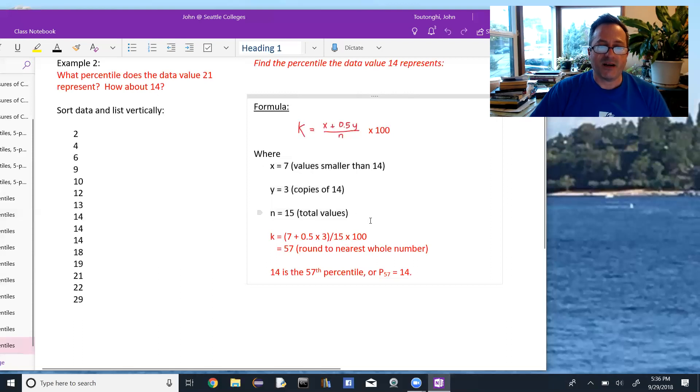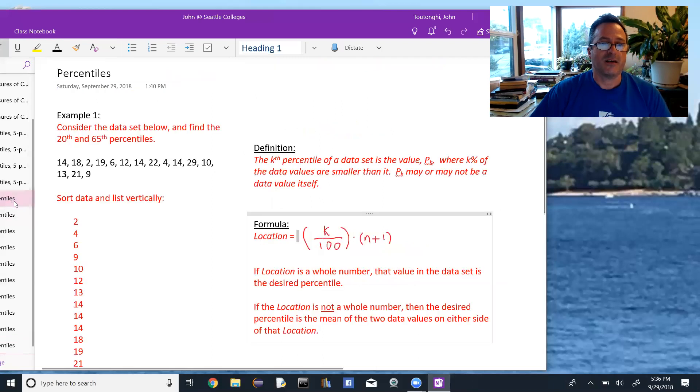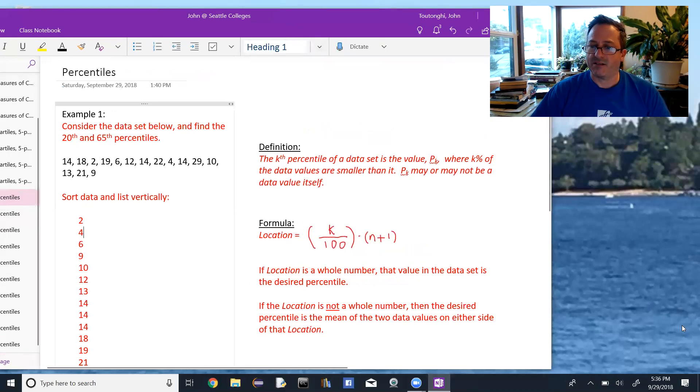Okay, so just something to be aware of. We are going to use these two formulas, the one giving you the percentile k when you're trying to go backwards, x plus half of y over n times 100, the other for the location k over 100 times n plus 1. Okay, and that does it for percentiles.